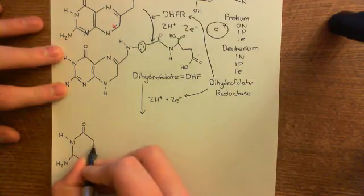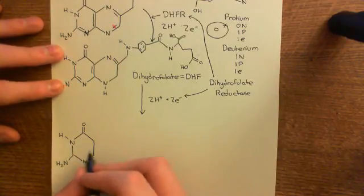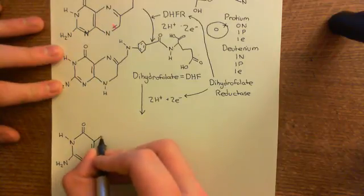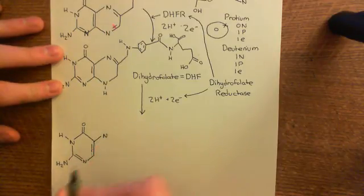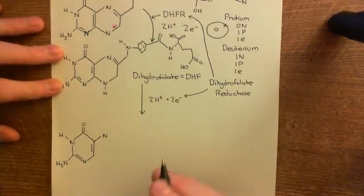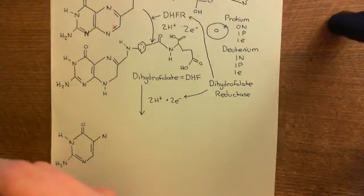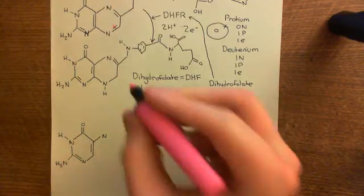Right, so you then have a double bond here, a double bond here, and then we've got what's left of the pyrazine ring. Now, you're going to break the other of the double bonds within the pyrazine ring. So this bond is going to go this time.